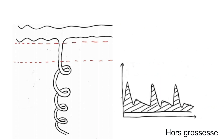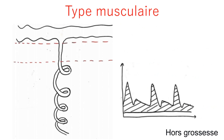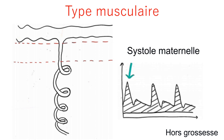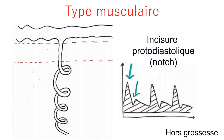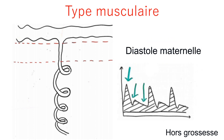Sur un Doppler d'artère utérine hors grossesse, l'artère est encore de type musculaire. On peut voir la systole maternelle, l'incisure protodiastolique ou notch, et la diastole maternelle.